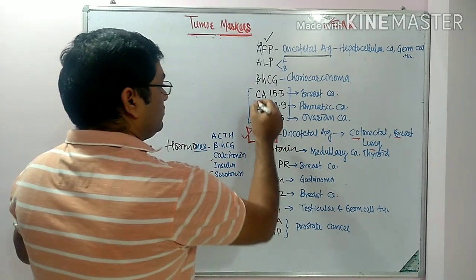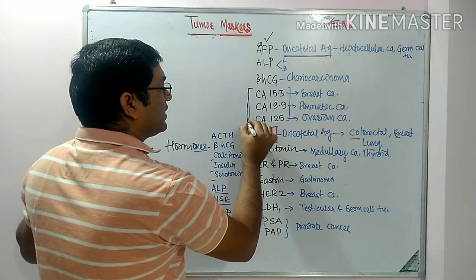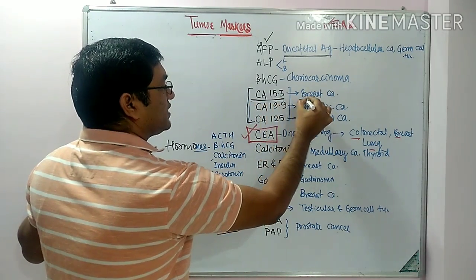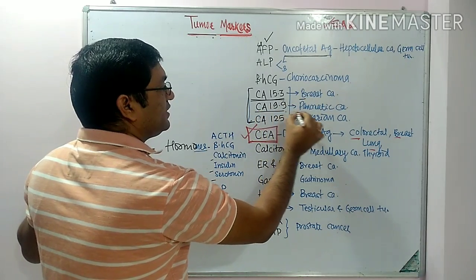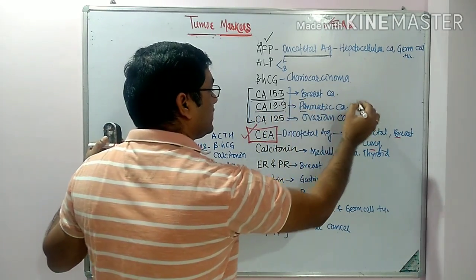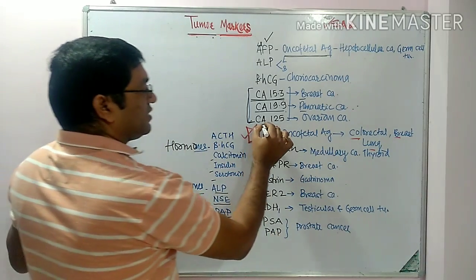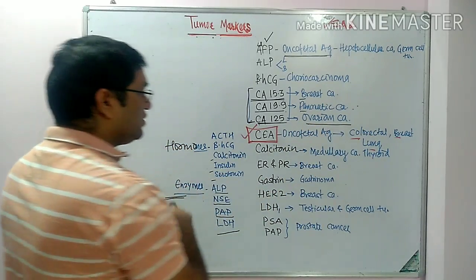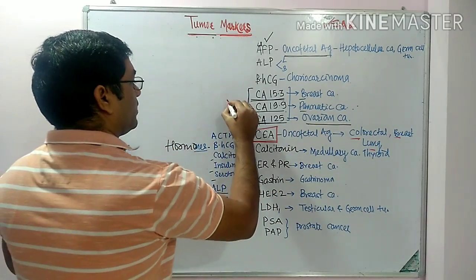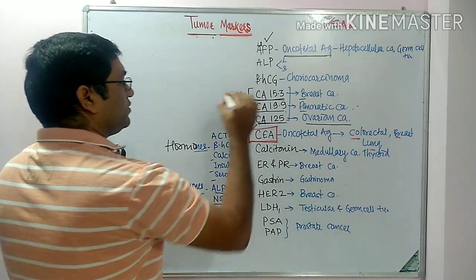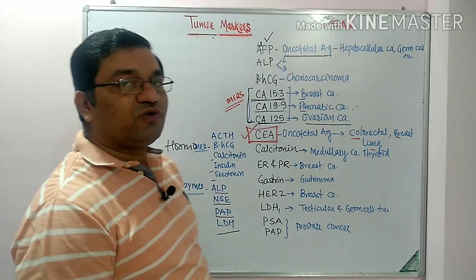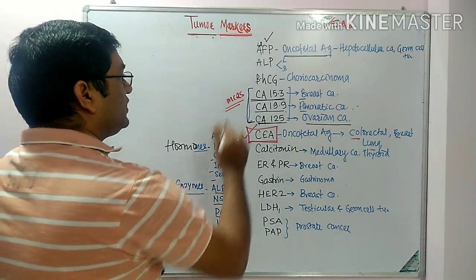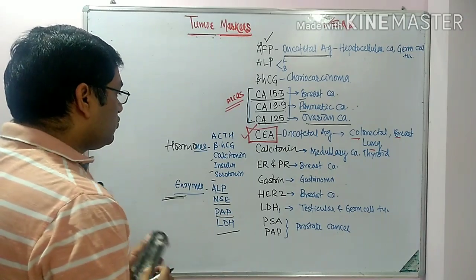The second category is carbohydrate antigen or cancer antigen. These include CA153, CA199, and CA125. Then various hormones are also used as tumor markers.